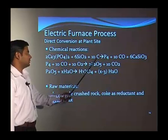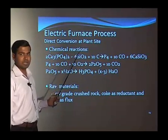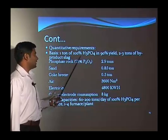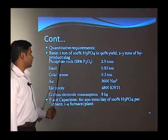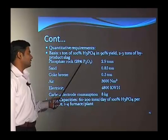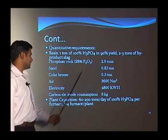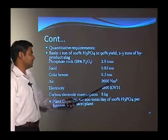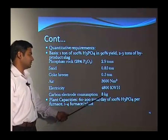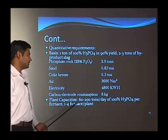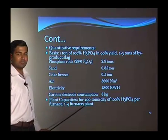We require phosphate rock with 28 percent phosphorous pentoxide at 2.9 tons, sand 0.85 tons, coke breeze 0.5 ton, air 3600 Newton meter cube. The electricity consumption will be 4800 kilowatt hours. The carbonator consumption will be 8 kg. Plant capacities will vary from 60 to 200 tons a day of 100 percent phosphoric acid per furnace, and generally a plant will have 1 to 4 furnaces.